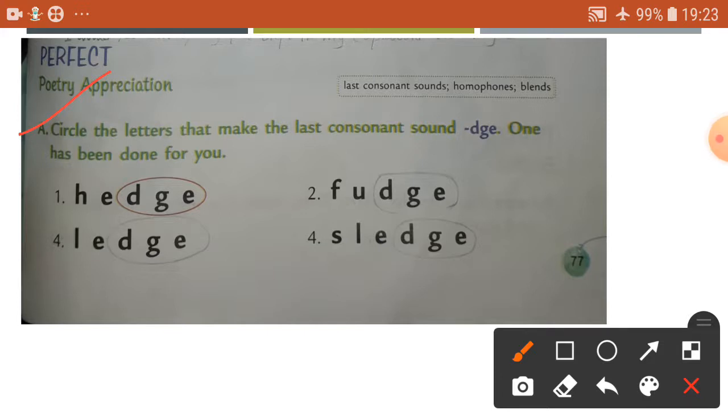It's very easy. Hedge, number one, hedge DGE. See here, circle this sound. Let's look at the words: fudge F-U-D-G-E, so circle DGE. Ledge DGE, sledge DGE. The question is circle the letters that make the last consonant sound.